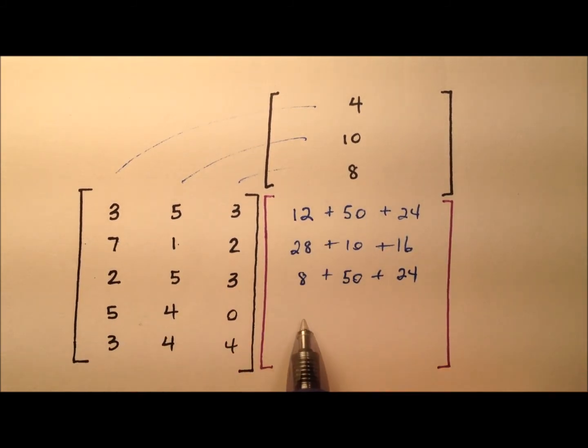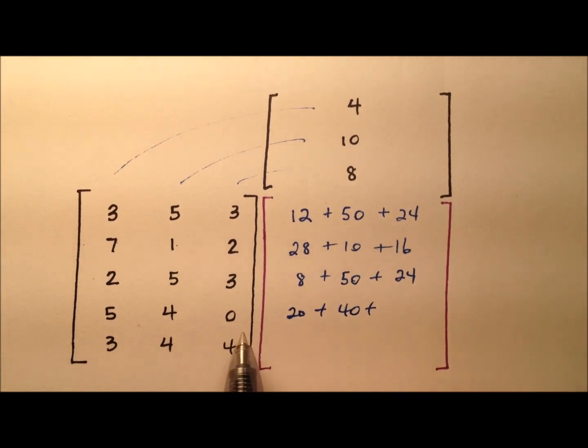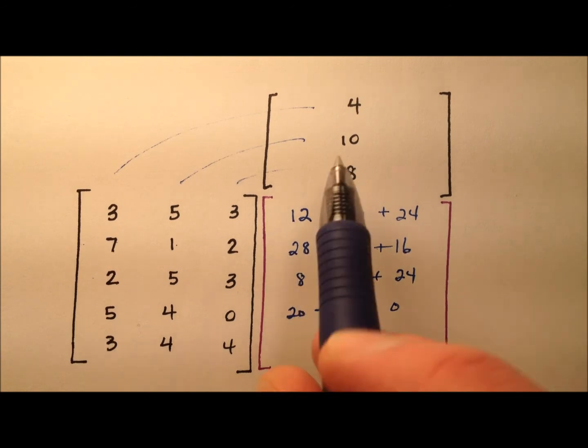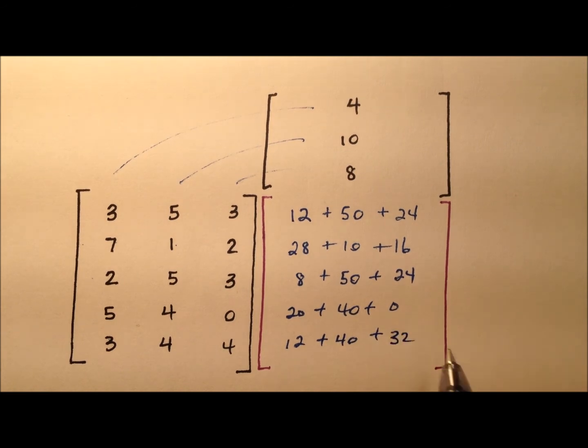Thursday then is 5 times 4 is 20. 4 times 10 is 40. And 0 times 8 is 0. So the last one, 3 times 4 is 12. We have 40 for that one and 32 for that guy.